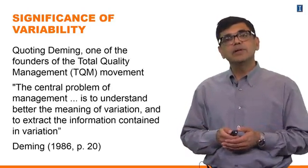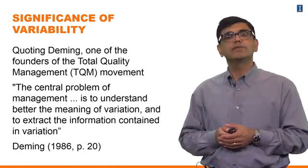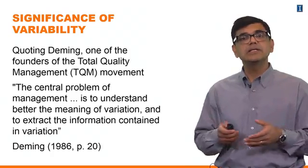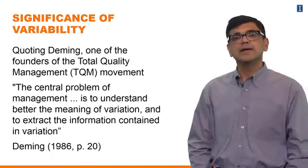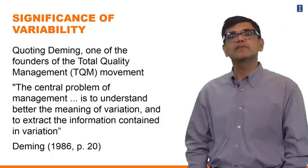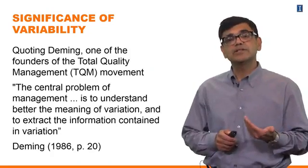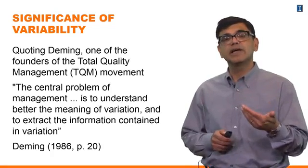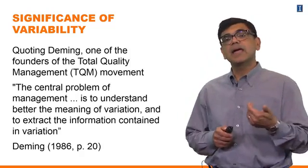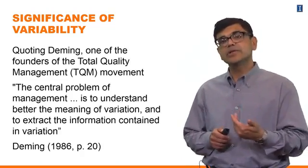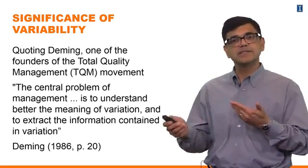If you think about reducing variability and tie it to total quality management, the basic underlying principle of TQM is that all variability in production processes should be reduced. To put it in the words of Edward Deming, known as the father of the total quality management movement: 'The central problem of management is to understand the meaning of variation and to extract the information contained in the variation.' His perspective was that you focus on variation to see how much should be there and what can be eliminated — this is the basic principle behind TQM and quality management initiatives such as lean, the Toyota Production System, and Six Sigma.